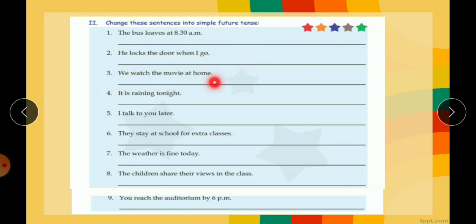We watch the movie at home. What is the verb? Watch. It's already in the first form, so you will just put shall. We shall watch the movie at home. It is raining tonight. Change raining into the first form rain, and is will be changed to will. It will rain tonight.